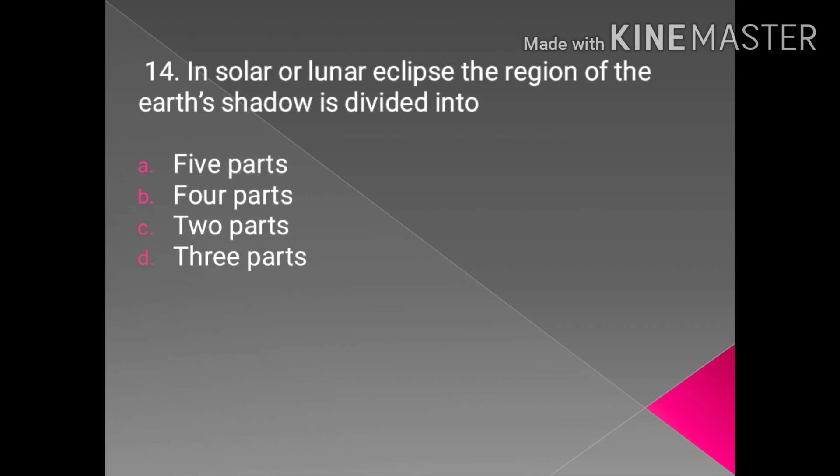So when the moon completely covers the Sun, there appears a darkest shadow which is known as umbra. In solar or lunar eclipse, the region of Earth's shadow is divided into three parts as we have explained it through the diagram. The first is penumbra, the second is antumbra, and the darkest one is umbra.